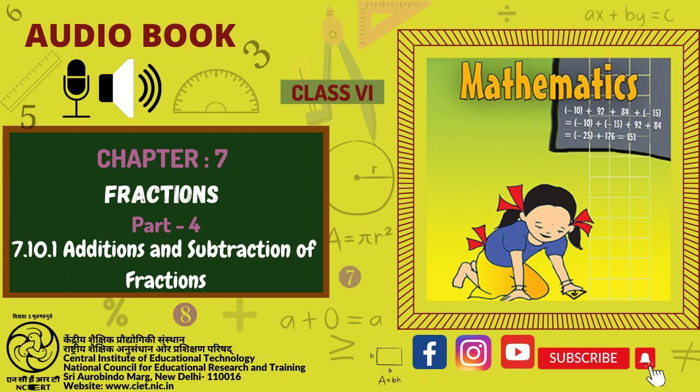Example 9. Add 2 fifth to 1 third. Solution: The LCM of 5 and 3 is 15. Therefore, 2 fifth plus 1 third is equal to 2 multiplied by 3 divided by 5 multiplied by 3 plus 1 multiplied by 5 divided by 3 multiplied by 5, which is equal to 6 upon 15 plus 5 upon 15, which is equal to 11 upon 15.